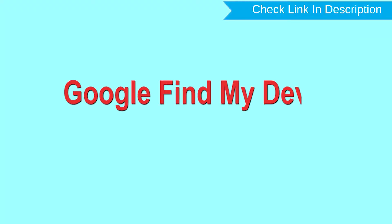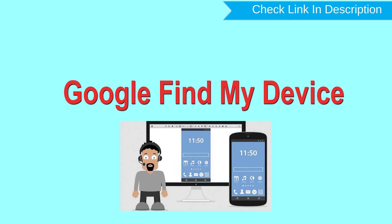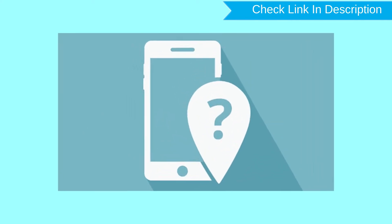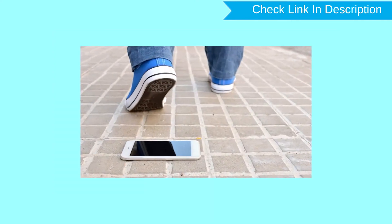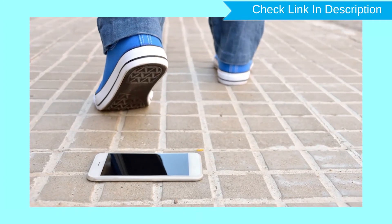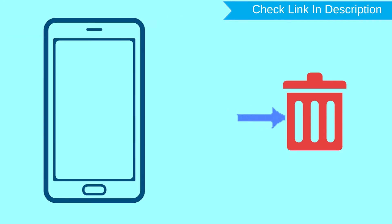Hard reset with Google Find My Device. This is the best method to reset your Android phone remotely. This method is useful when you lose your phone or are not able to access your mobile. This method also deletes all your Android phone data. After your device has been erased, you can't locate it.